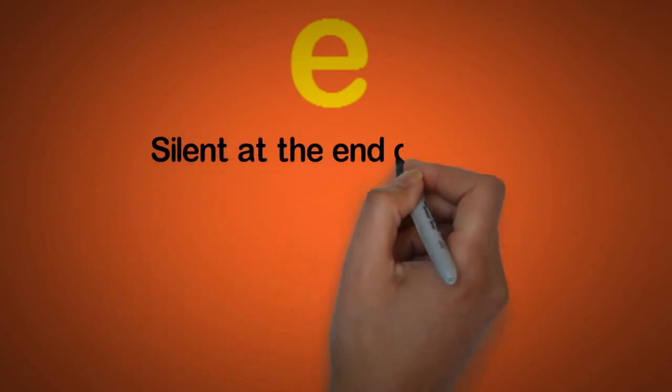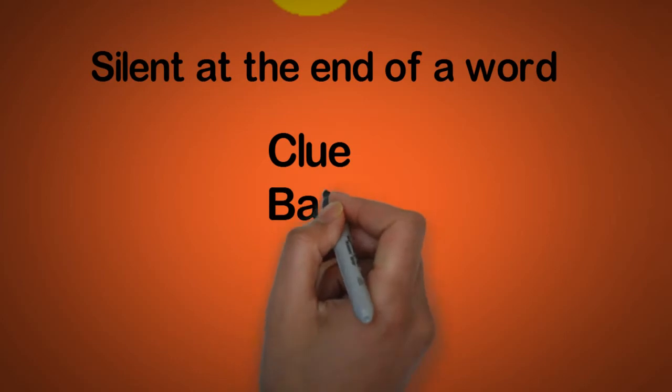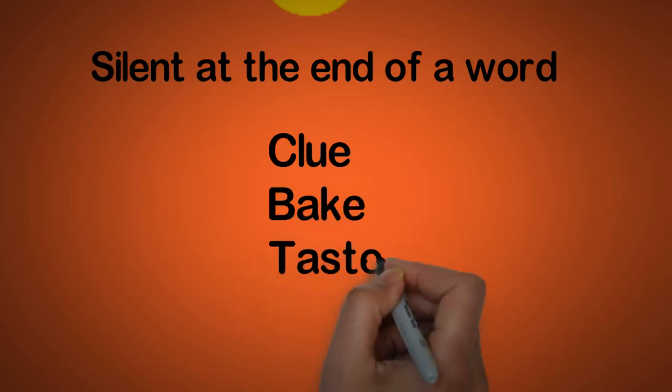Let's start with the letter E. The letter E can often be silent at the end of a word. I'm pretty sure you know this one already. Like these examples: clue, bake, taste.